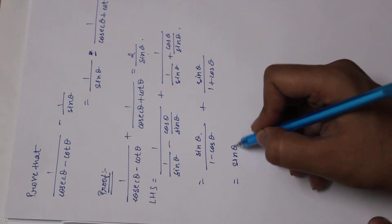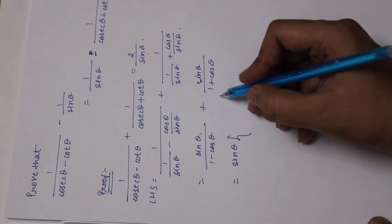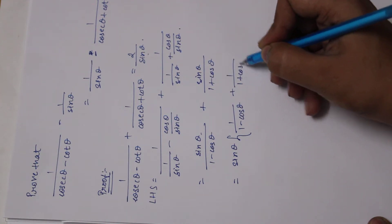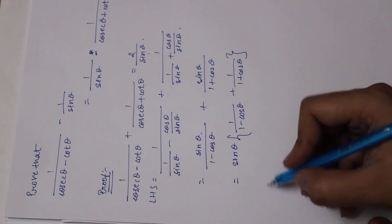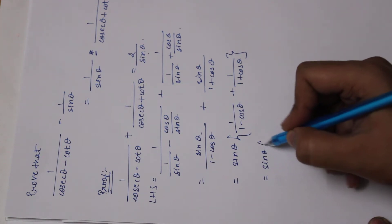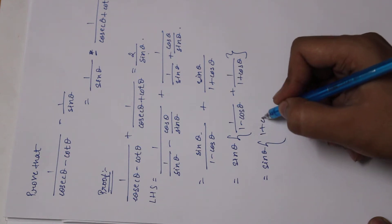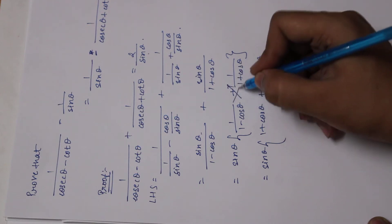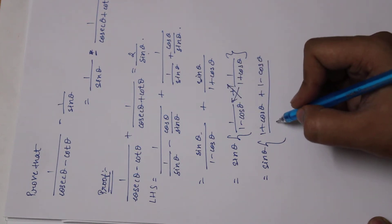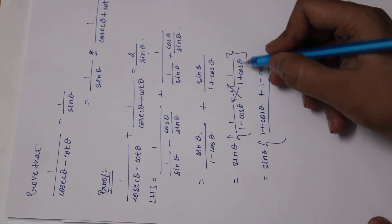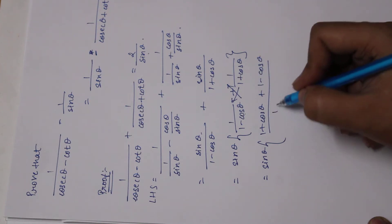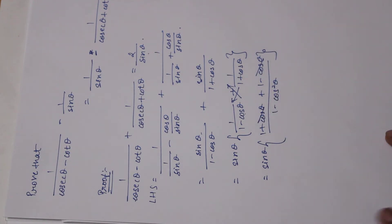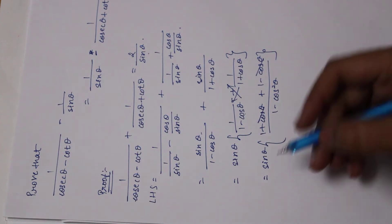I can take sin theta common. Then what I'm left with is 1 upon (1 minus cos theta) plus 1 upon (1 plus cos theta). In this part I cross multiply: (1 plus cos theta) plus (1 minus cos theta) — I just cross multiplied — divided by (1 minus cos theta)(1 plus cos theta), which becomes 1 minus cos squared theta.